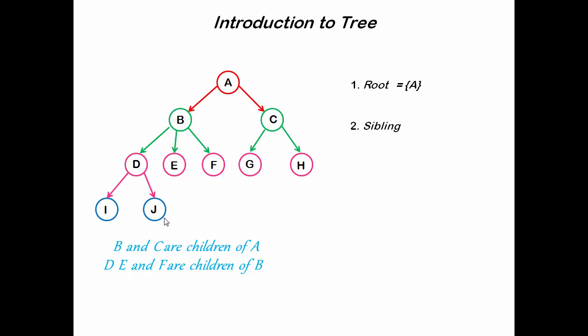Next one is sibling. Children of same parent are called siblings. Here, D, E, and F are siblings because they are the children of B. Similarly, G and H are siblings, I and J are siblings, and B and C are siblings.